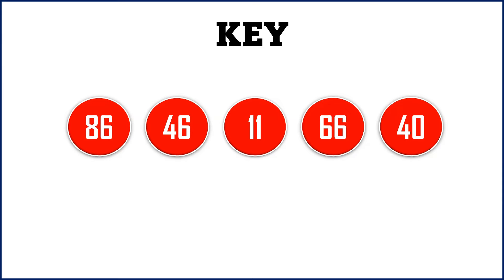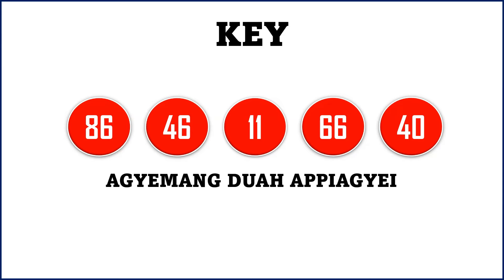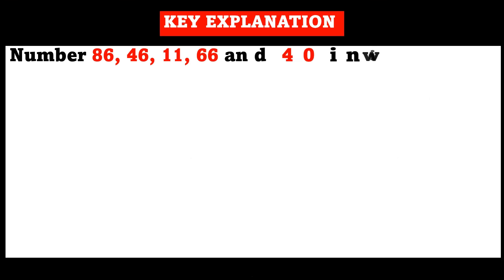Remember the channel name is Adjimundia PJ. In case you want to find the channel you can search on YouTube 'Adjimundia PJ' and you will see both old and current videos uploaded. Now the explanation of key number 86-46-11-66-40 in winning sequence.